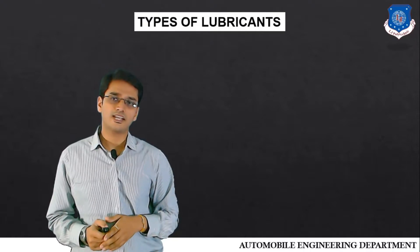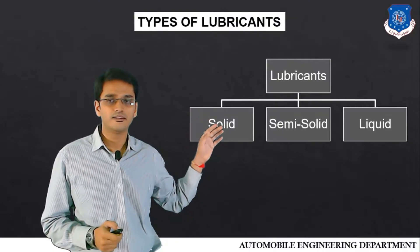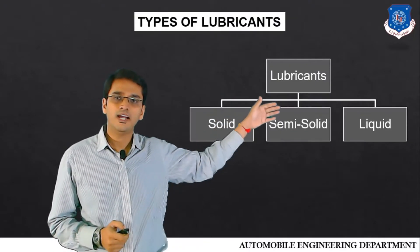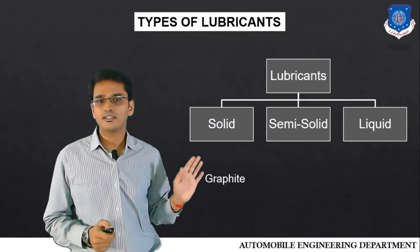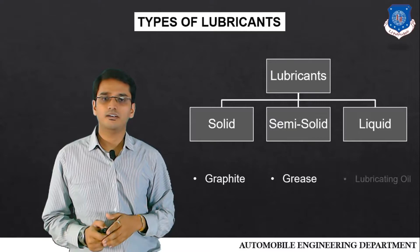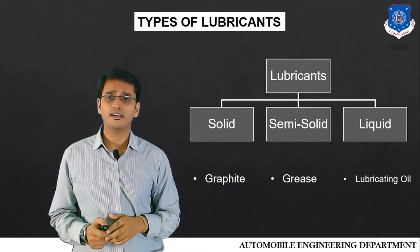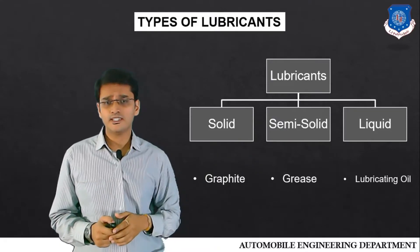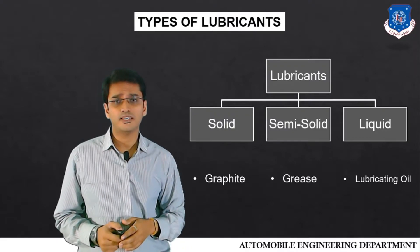Let us see the various examples of lubricants and their types. Lubricants are also categorized into three types. The first one is solid, semi-solid, and liquid. An example of solid lubricant is graphite. For semi-solid it is grease, and for liquid it is lubricating oil, which is mainly used in automobiles as well as in internal combustion engines for lubricating various parts to minimize friction and wear and tear.